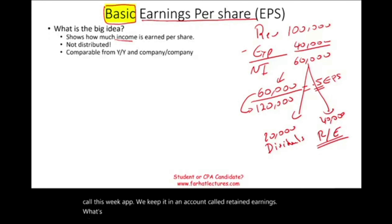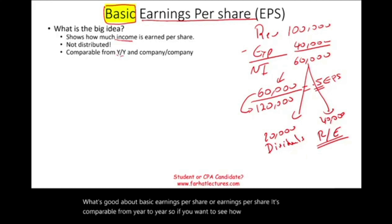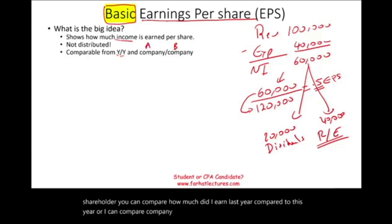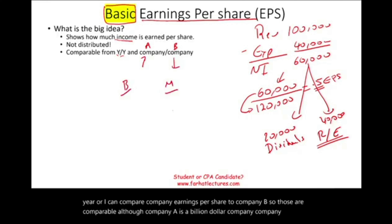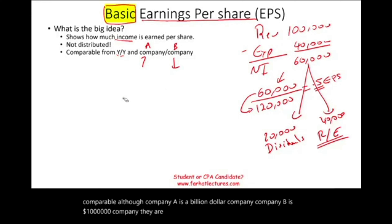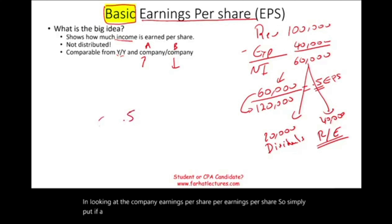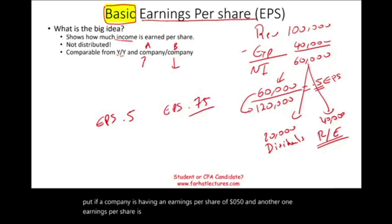What's good about basic earnings per share? It's comparable from year to year. If you want to see how well you are doing as a shareholder, you can compare how much did I earn last year compared to this year, or compare company A's earnings per share to company B's. Although company A is a billion dollar company and company B is a million dollar company, they are comparable. Once you compute earnings per share, it factors the size out. If a company has EPS of 50 cents and another has 0.75, you can compare them on the same level.